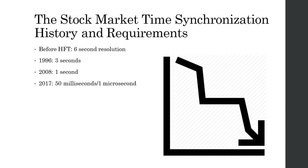Stock market time synchronization history and requirements. Before high frequency trading, there was a six second resolution. In 1996 this was decreased to three seconds to account for electronic trading. In 2008 it was reduced to one second. In 2017 it was taken from one second to 50 milliseconds for all trades, and down to one microsecond for high frequency trades done by computers. This is still the current standard for Europe.